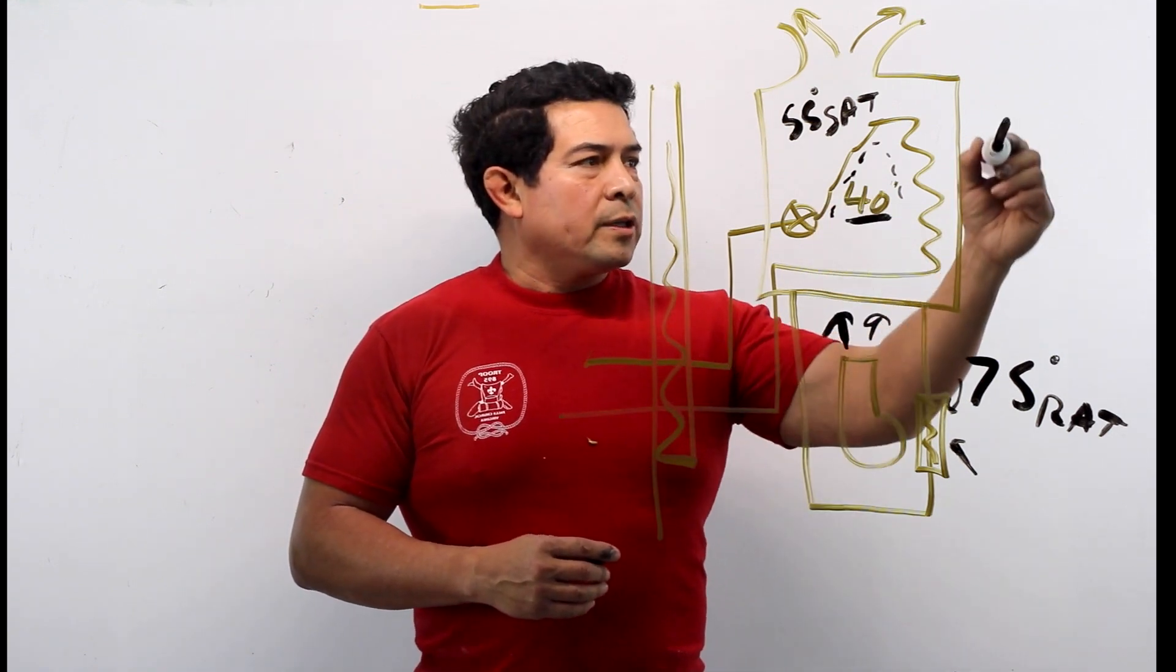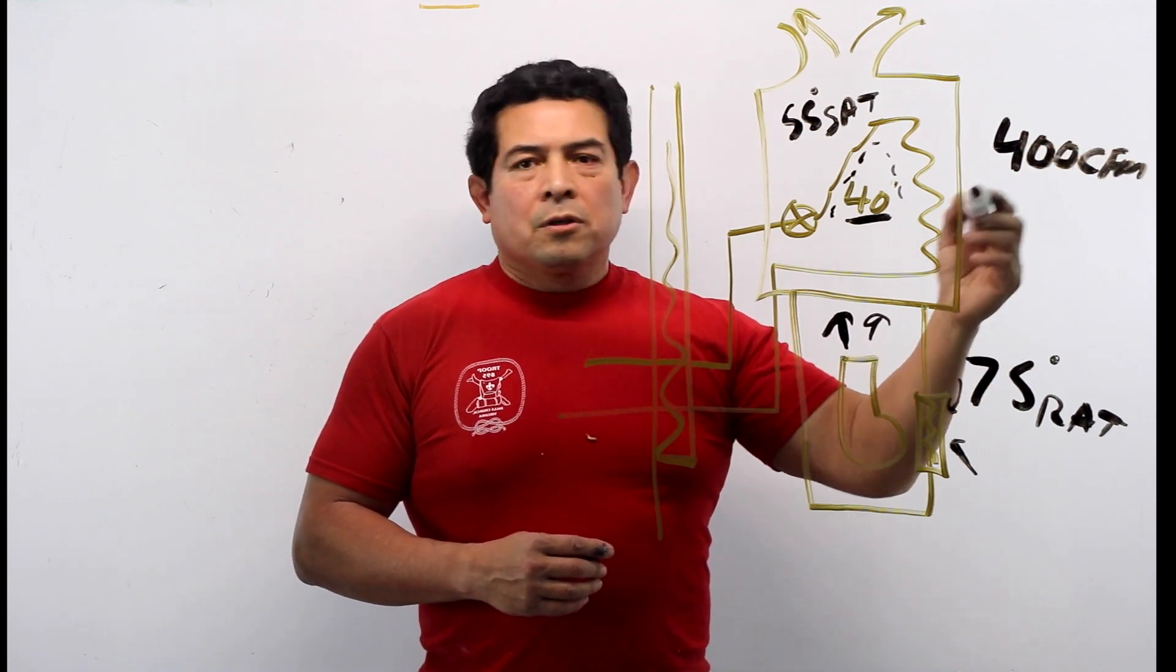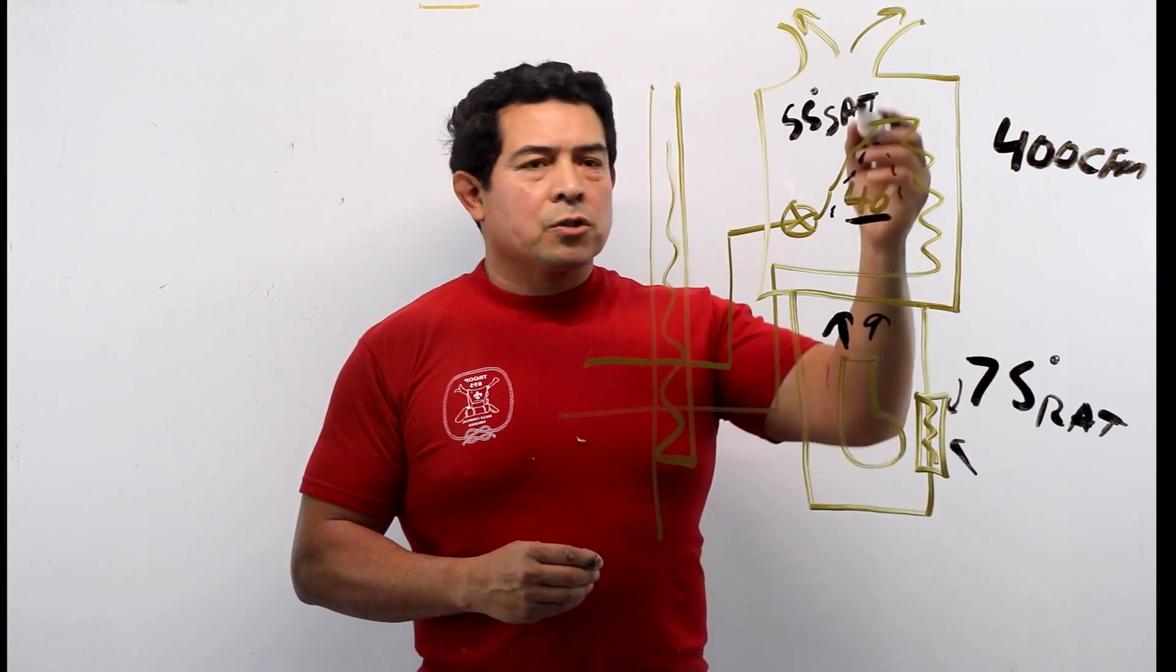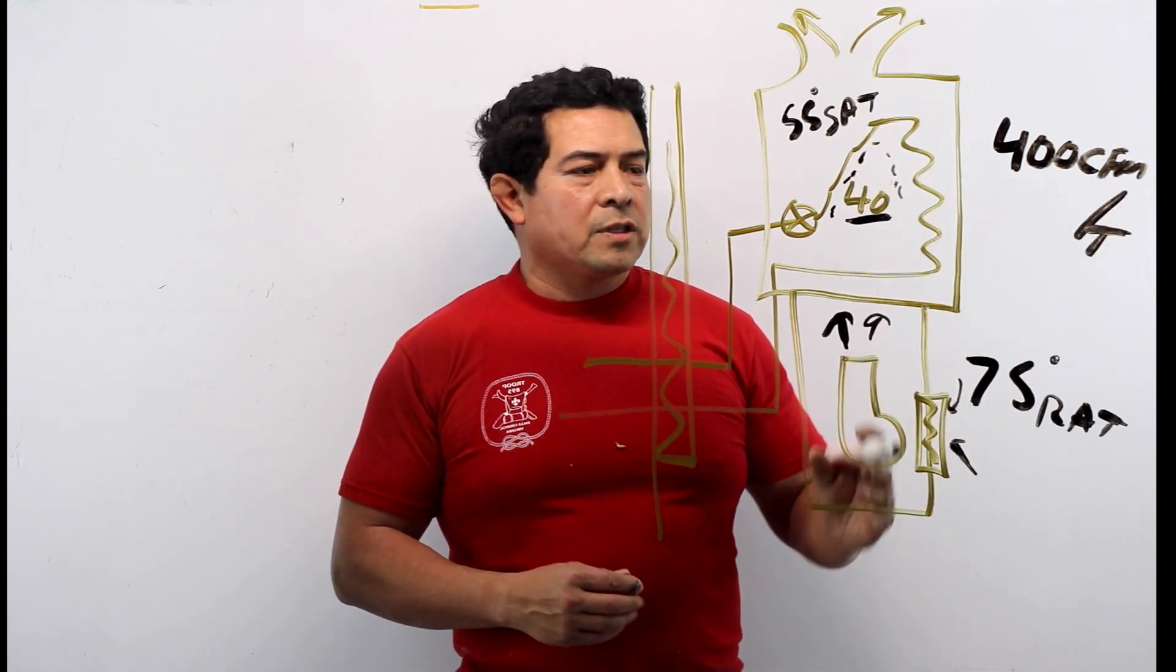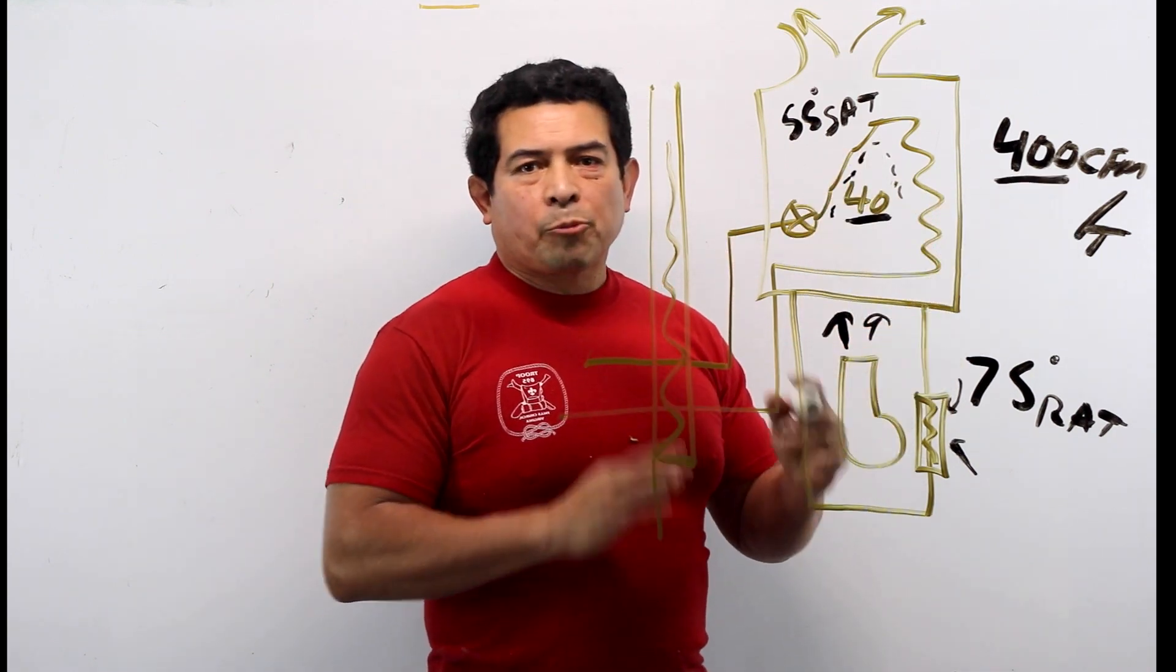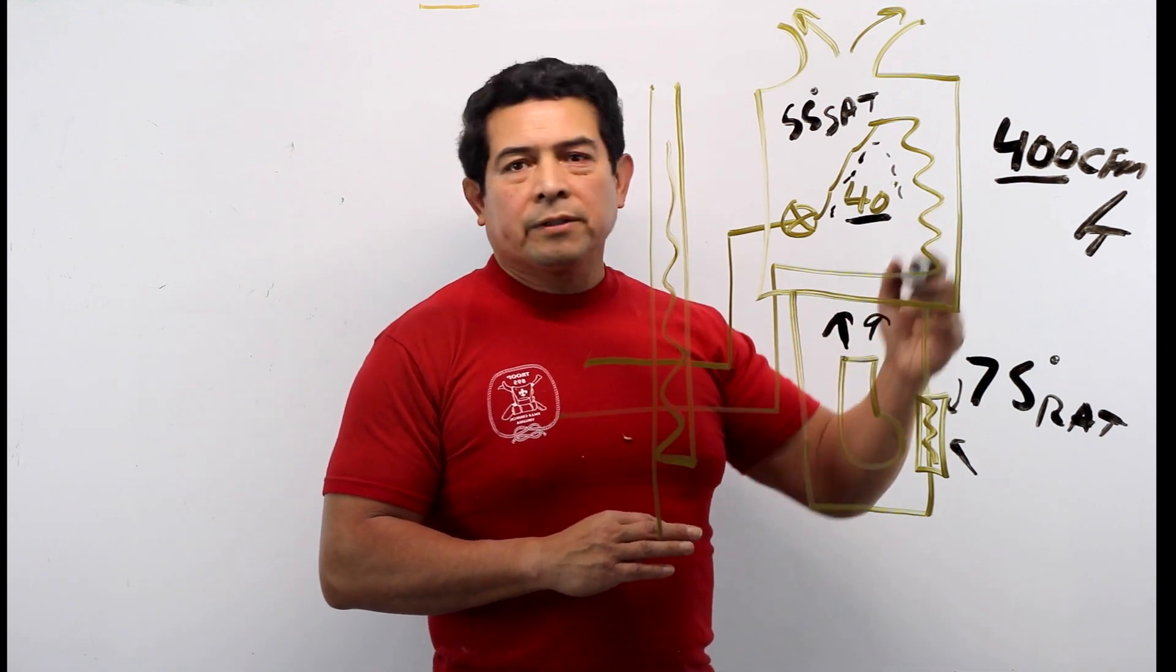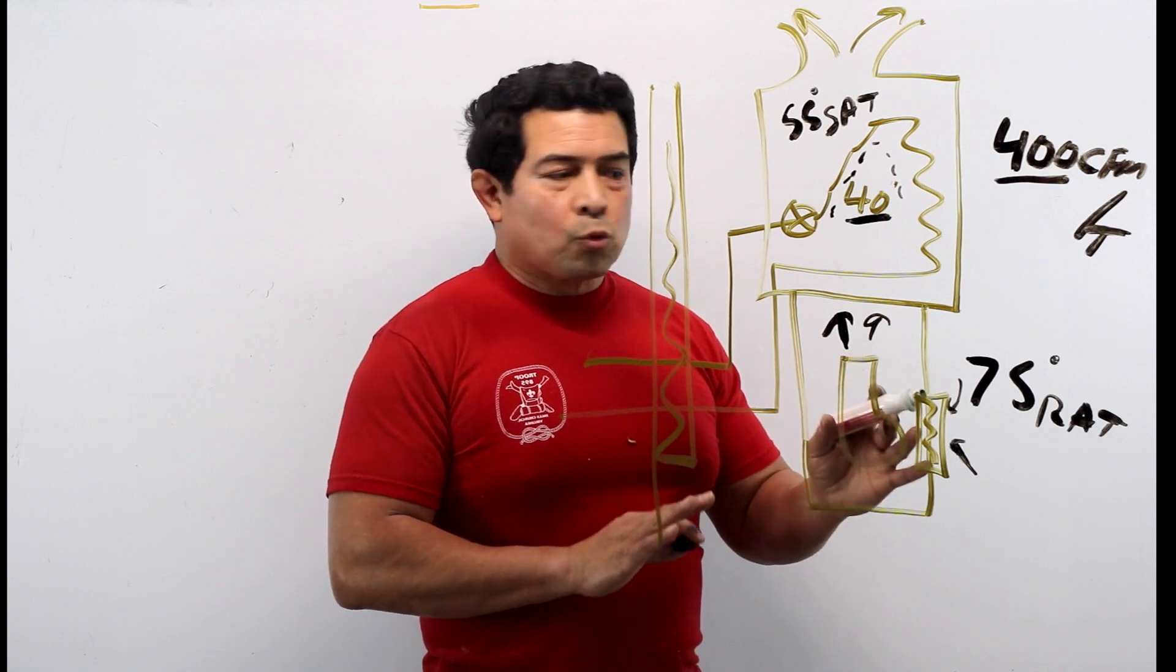Typically, we want approximately 400 CFM, 400 cubic feet per minute of air traveling across this coil, and that is per ton. So this is a 1 ton unit, we're going to want 400 CFM approximately. If this is a 2 ton unit, then we're going to want about 800 CFM, if everything's working right.